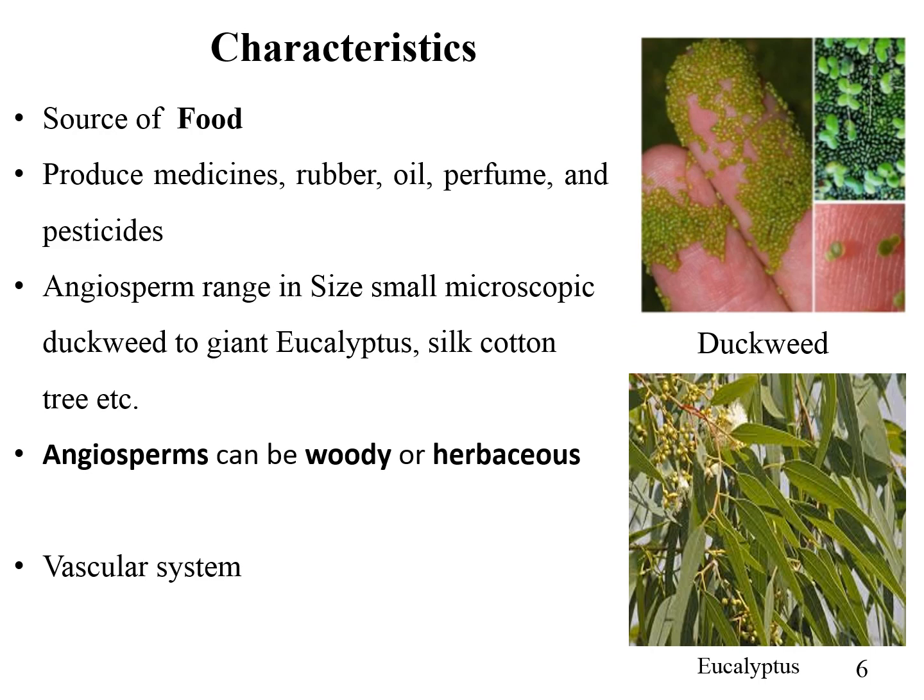Angiosperms range in size from small microscopic flowering plants like duckweed — minute plants floating at the surface of ponds — to giant trees such as eucalyptus and silk cotton. Angiosperms can be woody or herbaceous. In woody plants the stem is hard and woody, called the trunk, and contains secondary tissues. Herbaceous plants are small plants with soft and green stems, and possess specialized vascular tissues such as xylem and phloem that translocate water and nutrients to all parts of the plant body.